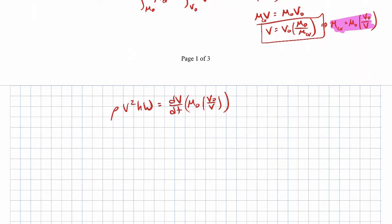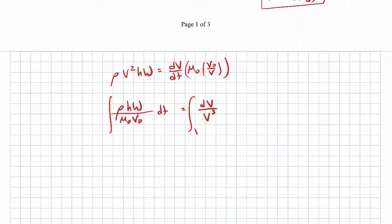The left-hand side is rho v² times hw; the right-hand side is dv/dt times m₀ v₀ over v. We now have a differential equation we can solve. Rearranging: rho hw over m₀ v₀ times dt equals dv over v³. Integrating both sides from initial velocity v₀ at time t = 0 to velocity v at arbitrary time t — the left-hand side terms are not functions of time, so they come outside the integral — gives rho hw over m₀ v₀ times t.